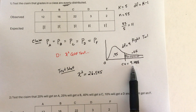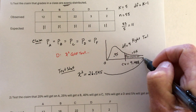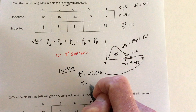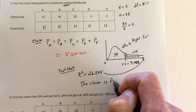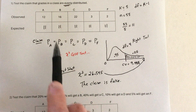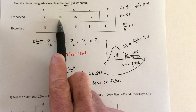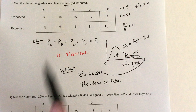The cutoff for unusual values is 9.488. Anything past that is unusual, and 26.545 goes way past it. So we can reject the claim — the claim is false. In other words, grades are not evenly distributed. If they were, all categories would have been 11; they are not close to 11, so the claim was false.